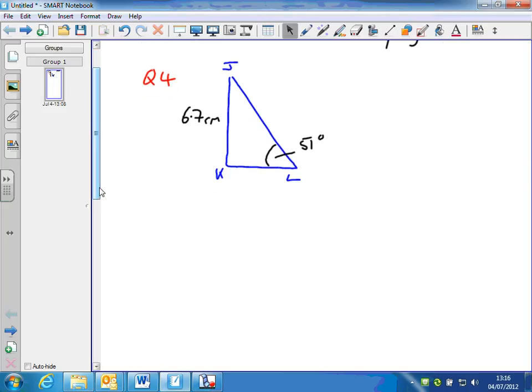By solving it, that means find all the angles and all the sides. We know that's a right angle, so we can find angle J as we did in the previous question.